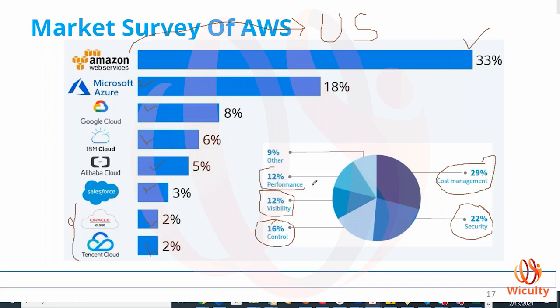12% of companies move due to visibility and performance. The hardware and software that cloud offers are highly reliable. On-premises, you won't get visibility of what's happening in your account, but that is resolved in the cloud. Performance-wise, you get a better result because of high availability, fault tolerance, cost optimization, and operational excellence. 9% of companies move to the cloud for other reasons.